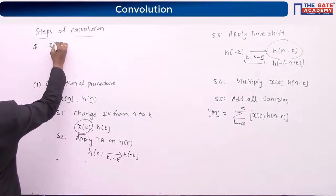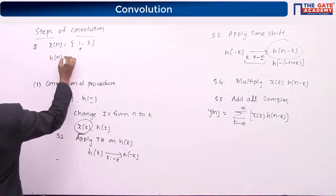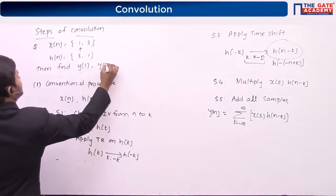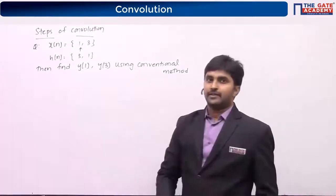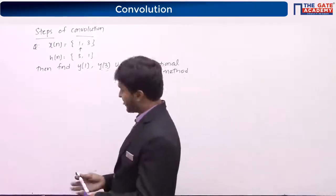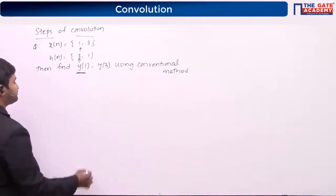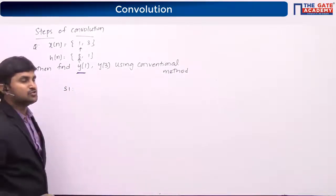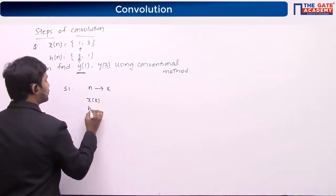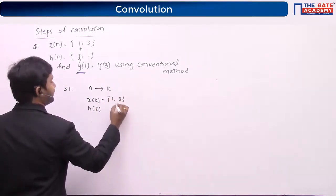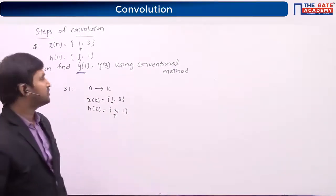Let us take a question: x of n equals {1, 3} and h of n equals {3, 1}. Find y of 1 and y of 3 using the conventional method. Step 1 is to change the independent variable from n to k, so we have x of k equals {1, 3} and h of k equals {3, 1}.